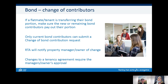Change of contributors can be done through web services or by paper form. This process is used when a tenant or flatmate is moving out and will transfer their portion of the bond to the new person moving in or to the remaining tenants. The tenant moving out needs to ensure they receive their portion directly from the new person or those remaining. Any current contributor can submit a request to the RTA. The RTA notifies the property manager or owner of any changes, and note that any changes to a tenancy agreement require the approval of the agent or owner.